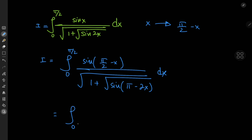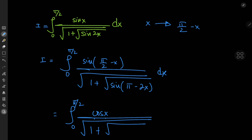In the numerator, sin(π/2 − x) transforms via the phase shift into the cosine function. In the denominator, we have 1 plus the square root of sin(π − 2x). Now sin(π − something) equals sin of that something, so we have sin(2x) again inside the square root.